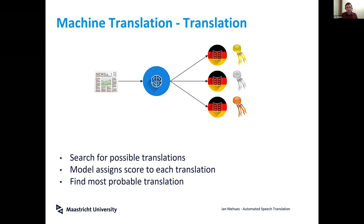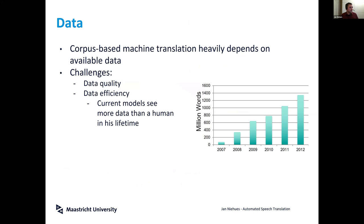But there are quite some challenges: there are many languages where there's not enough data, and we don't just need some data — we need good-quality data. There's a big field of research on how we can determine which data is of good quality and which we can use to train our systems.